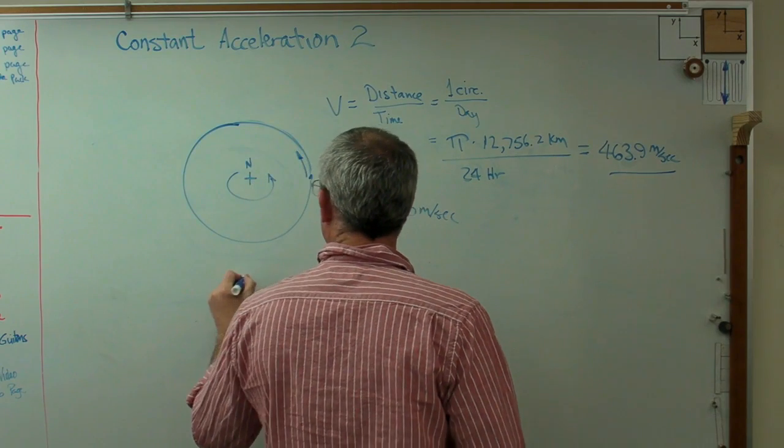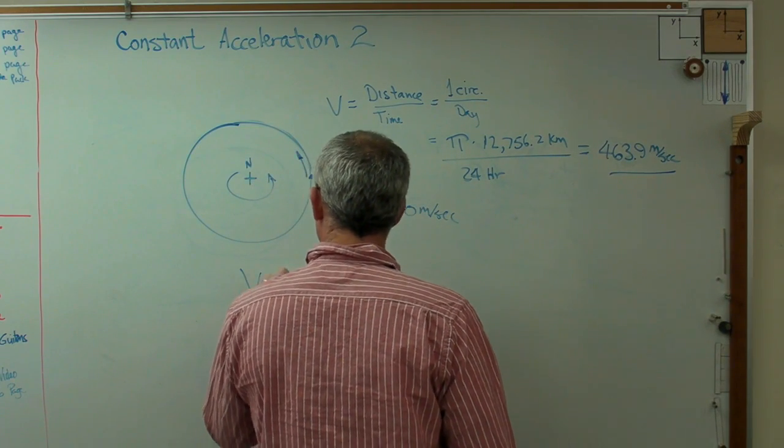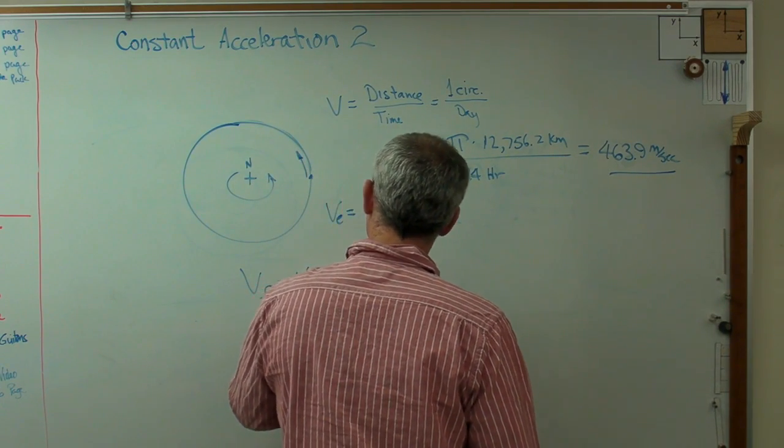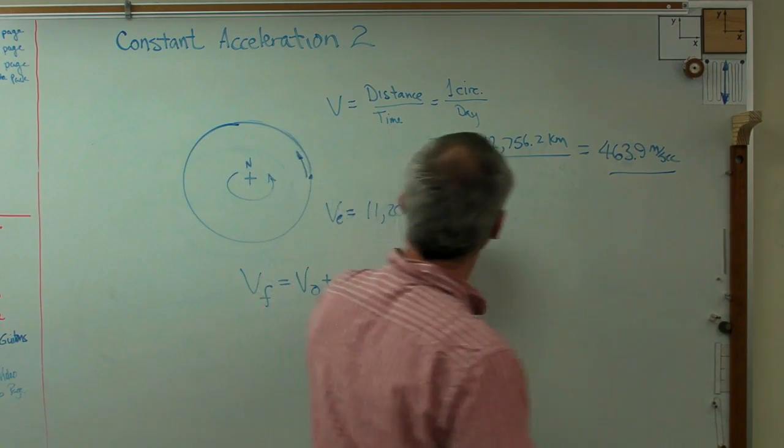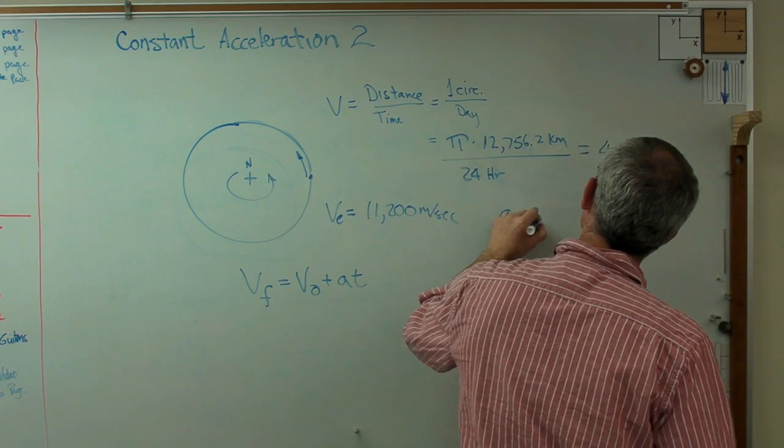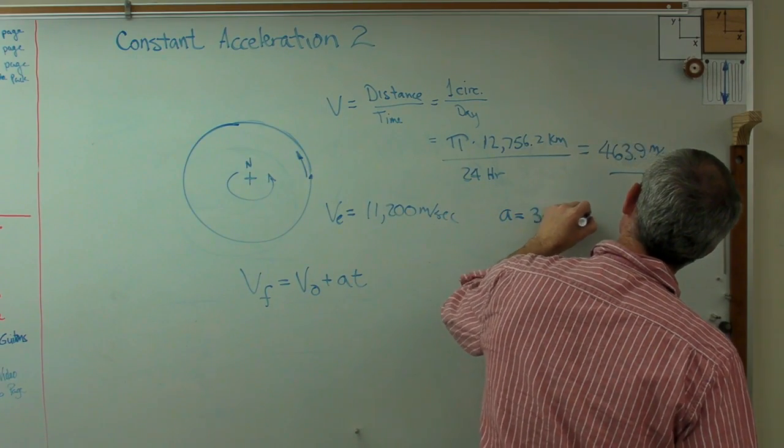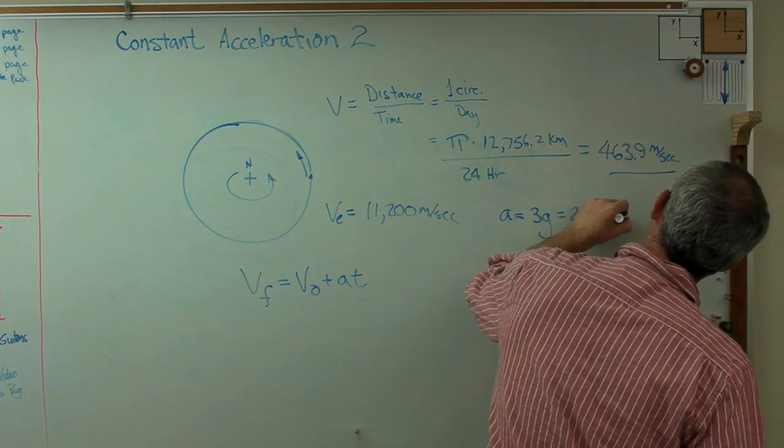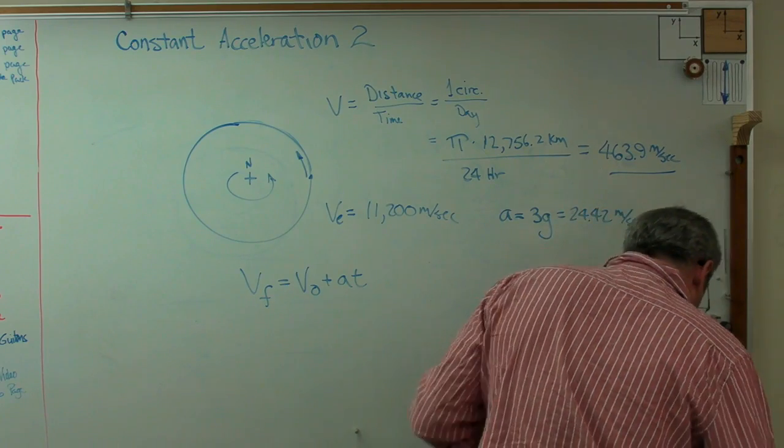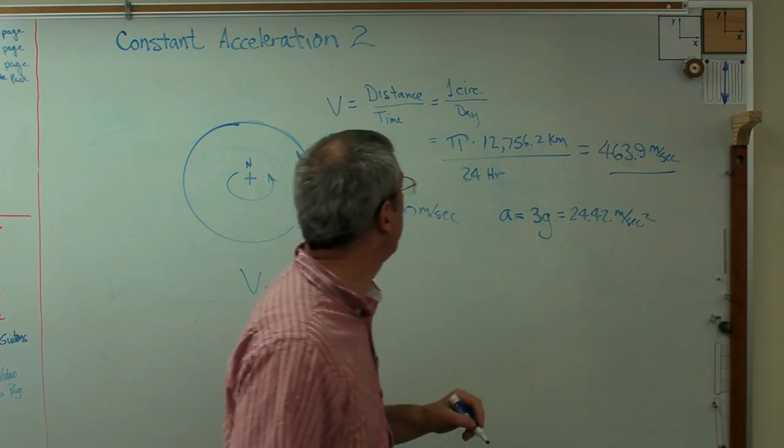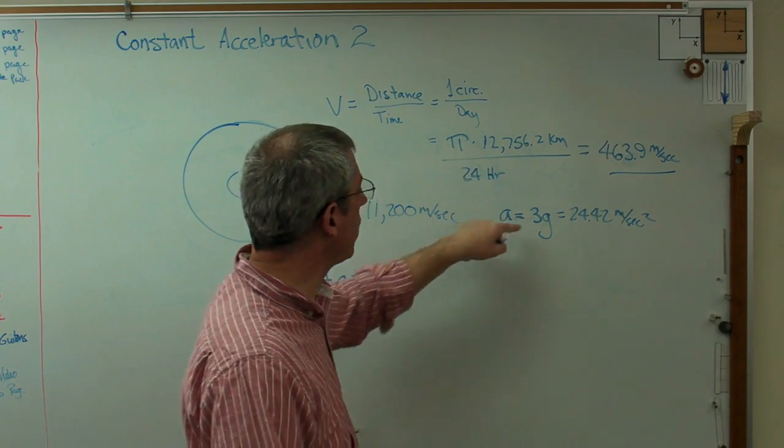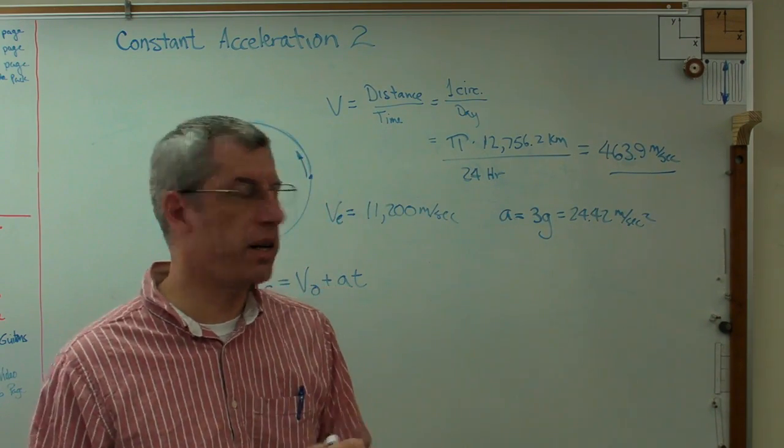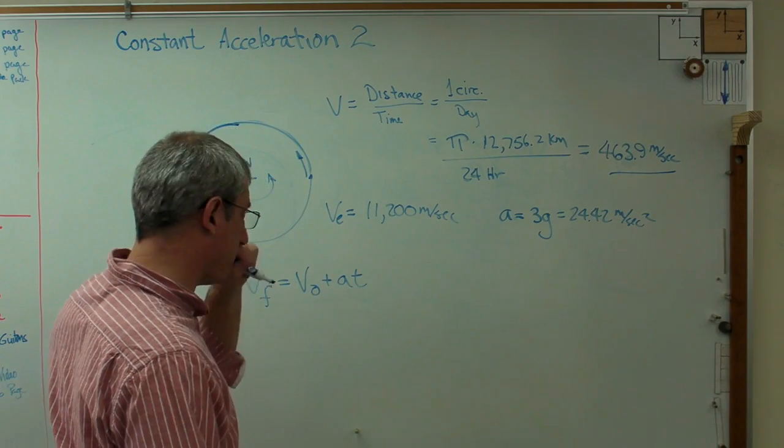If we look at constant acceleration, v final is v initial plus the rate of acceleration times time. We said in the last problem, my acceleration is going to be three g's, and that's 29.42 meters per second squared. Three g's is a pretty comfortable acceleration. Just about anybody could withstand that if they're strapped in and supported appropriately.